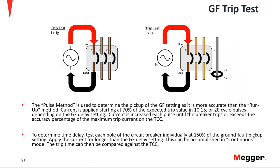Once we have the pickup, we can determine the time delay for each pole, starting at 150% of the pickup value. You do a continuous injection, configure your instrument to inject for longer than the delay setting to ensure coverage. Once you have your recording, you compare against the time current curve for that breaker.